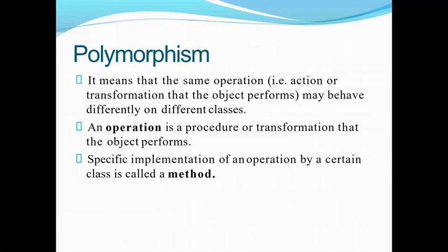If we take 'student' as a class, students will have many forms: name, USN, subject, and whatever is allocated — all these are many forms. That is also polymorphism. An operation is a procedure or transformation that the object performs; you have to select one operation on which your object is going to work. That is the meaning of polymorphism.